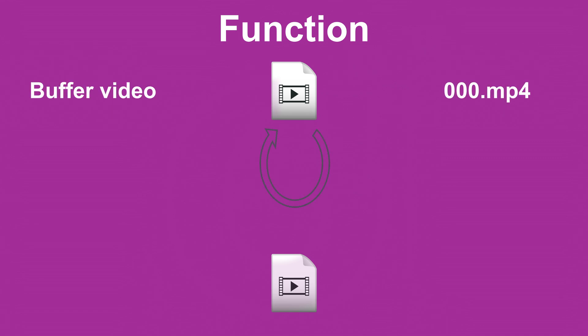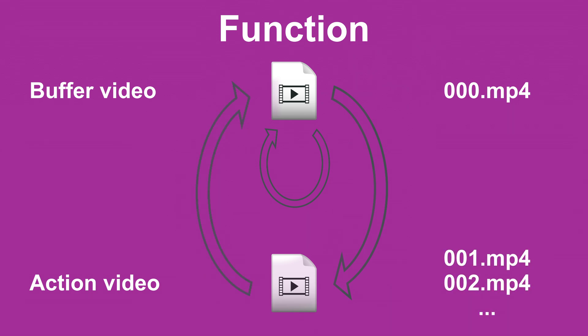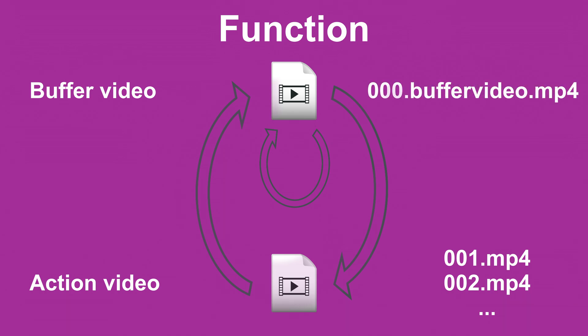For this we have to make sure that we follow certain rules. First, the buffer file is called 000. Second, the action files are numbered from 001 to 009 or 025. Do not skip any file number. If necessary, it is possible to integrate an additional designation to the file name — for example, this could be 000.buffervideo.mp4.